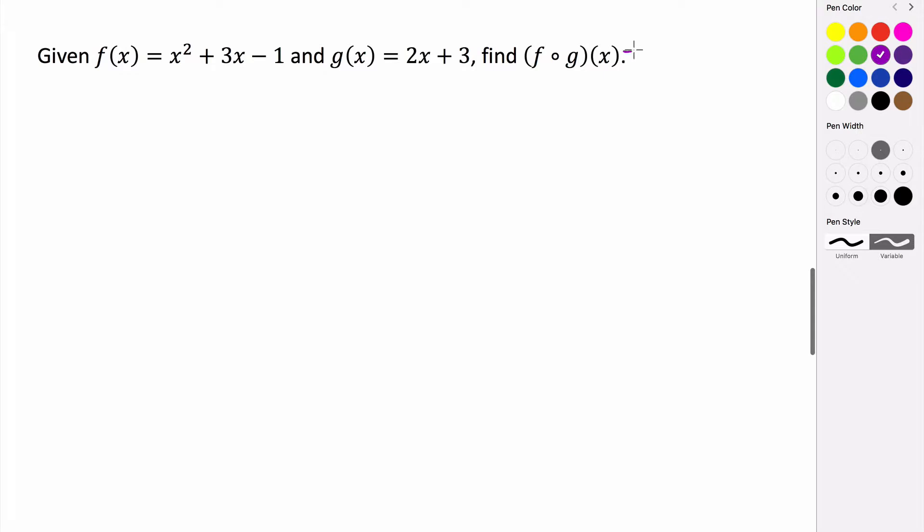So remember this just means that we're taking f and evaluating it at g of x. So f of g of x. So what does this actually mean? Well, really what this is saying is that this here, g of x, is becoming the new input for our function of f.